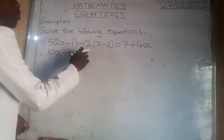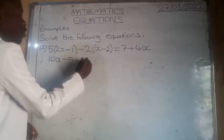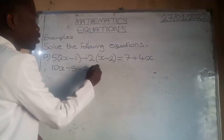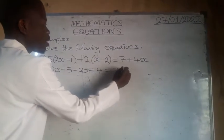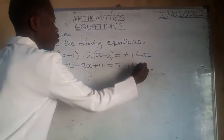Negative 2 times x is negative 2x. Negative 2 times negative 2 is positive 4, which is equal to 7 plus 4x.